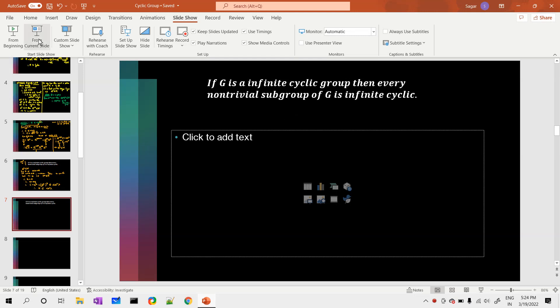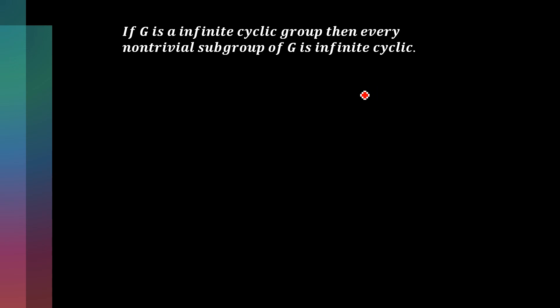This video will be talking about a wonderful result in cyclic groups. The result is: if G is an infinite cyclic group, then every non-trivial subgroup of G is also an infinite cyclic group. To prove this result, we will take help of the fundamental theorem of cyclic groups — which states that every subgroup of a cyclic group is cyclic.